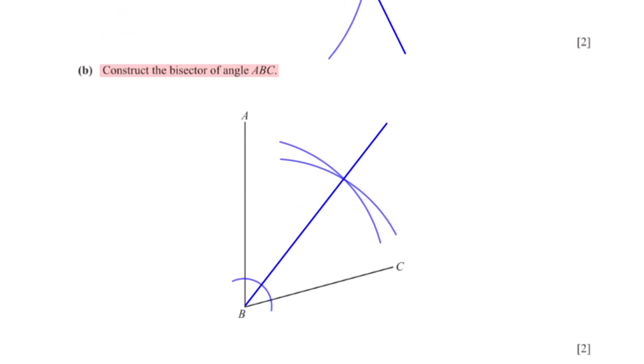Construct the bisector of angle ABC. With our pair of compasses, we stand at point B and inscribe an arc for angle ABC. Then standing at this point, we open our compass to a wider width and inscribe an arc. Using the same compass width, we stand at this point and inscribe another arc. When we are done, we use a ruler to draw a straight line from point B that passes through the intersection point of the arcs.